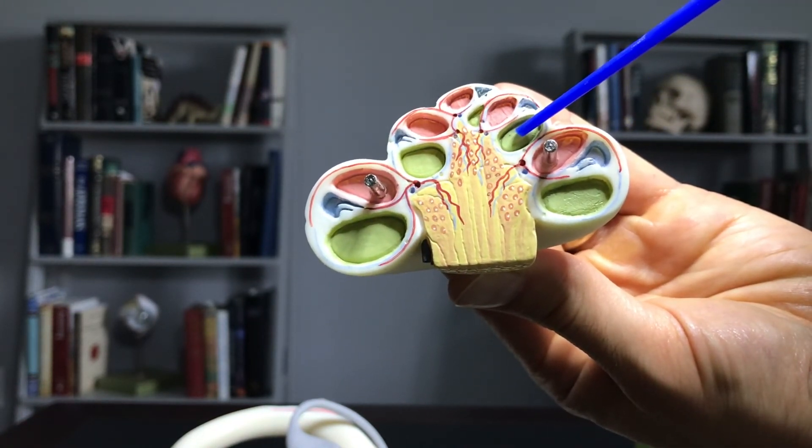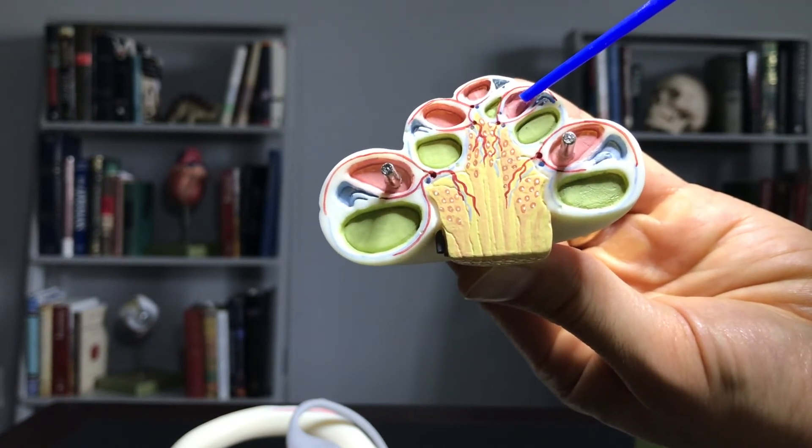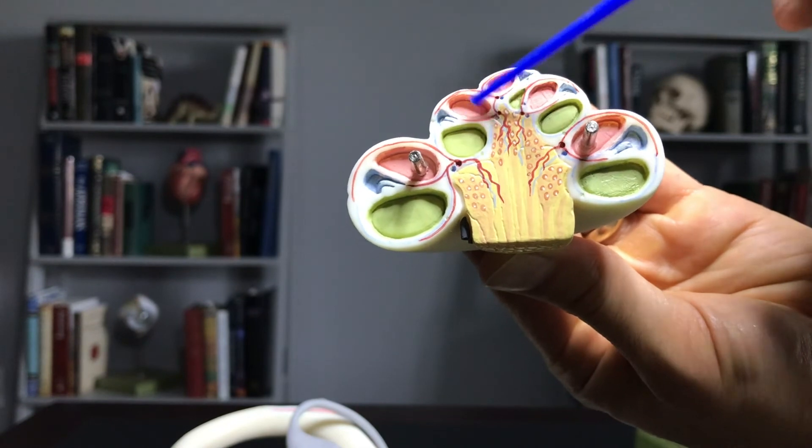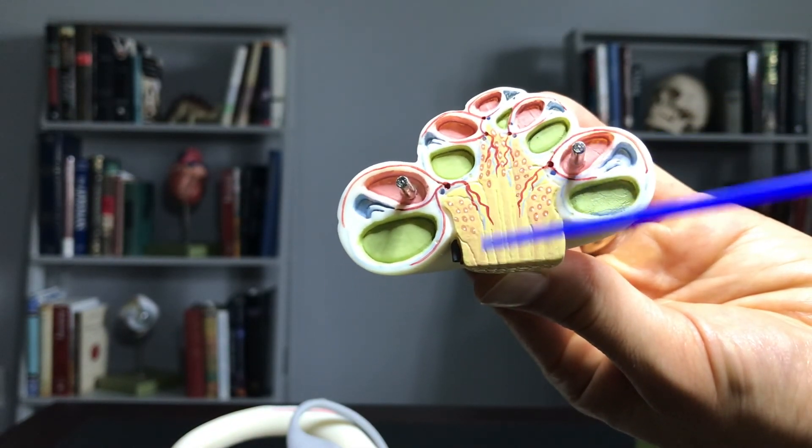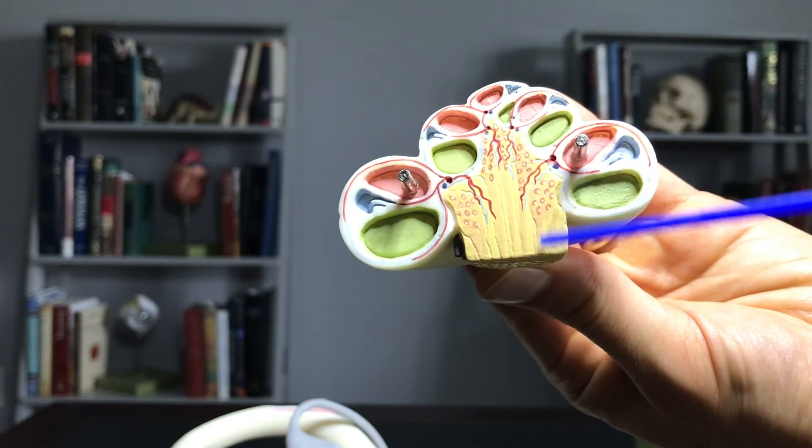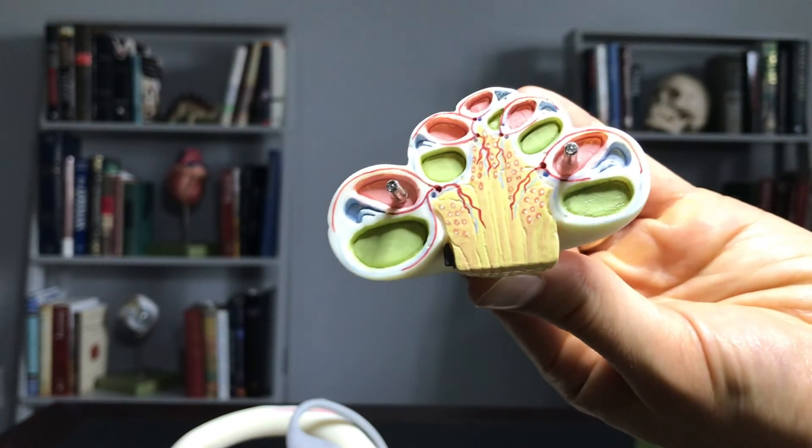Again: green is the tympanic duct, blue is the cochlear duct, and pink is the vestibular duct. There's another set and another set. What you see here is the nerve supply—the cochlear branch of cranial nerve number eight running to each of these regions.